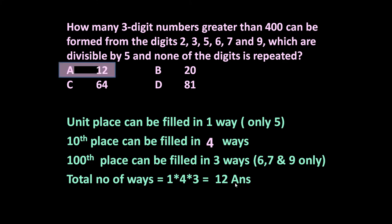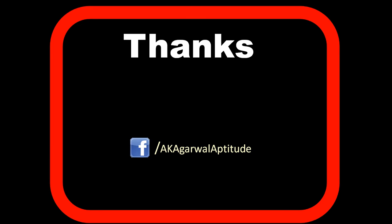So the total number of ways is 1 × 4 × 3 = 12. The answer is 12. In total, 12 different three-digit numbers can be formed which are greater than 400, divisible by 5, and have no repeated digits. Thank you very much for watching this video. You can also follow me on Facebook.